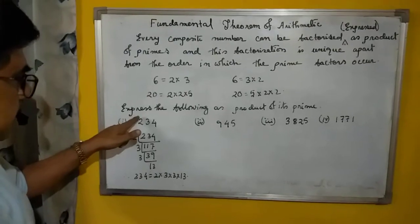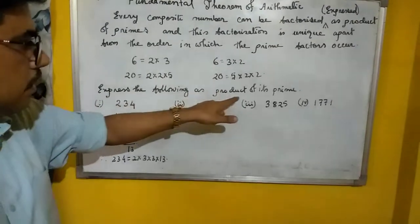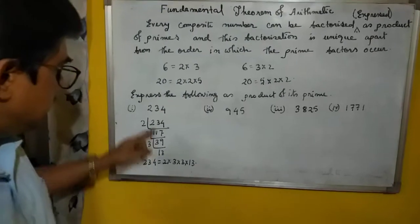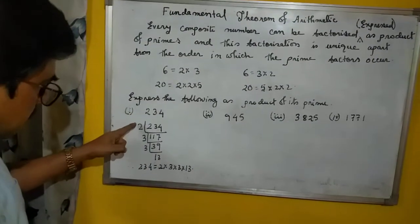Now, next question: express the following as a product of its prime factors. These are the sums. How to do this? In lower classes, you divide like that, right?